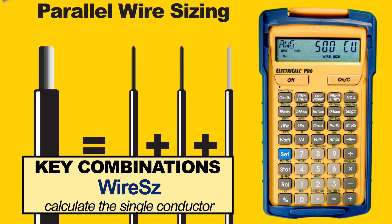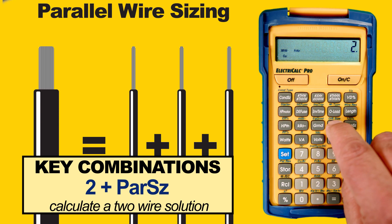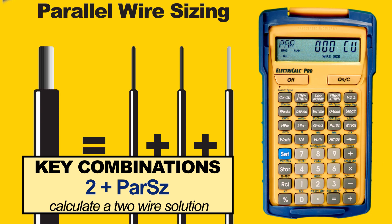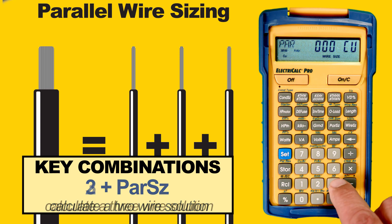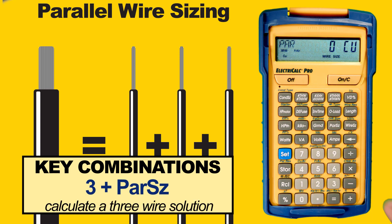Another alternative is to look for a parallel solution. Let's look at doing it with 2. Press 2, then press the parallel size button, and we see we can do it with 2 three-aught coppers. Let's look at 3. Press 3, then press the parallel size button. We see that we can do it with 3 one-aught copper wires.